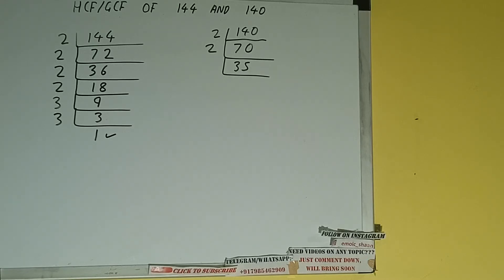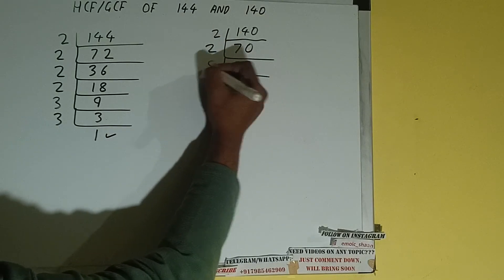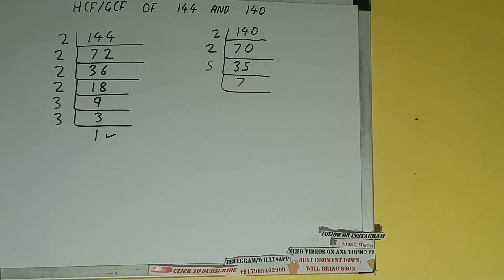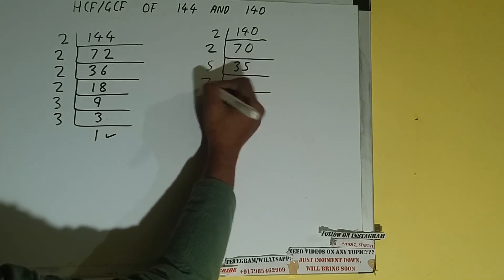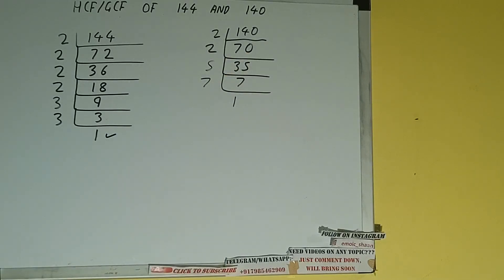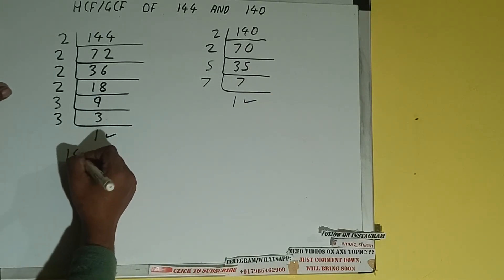We check the next lowest prime number, 5. Is 35 divisible by 5? Yes it is, and we'll get 7. Now 7 is not divisible by 5, and 7 is also a prime number, so it is only divisible by itself — 7. Once we do so, we'll be getting 1. Once we get 1, we stop.